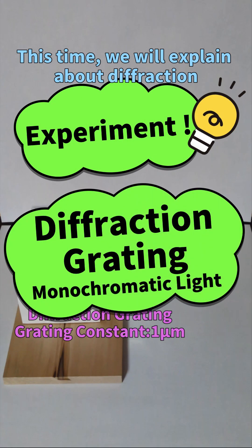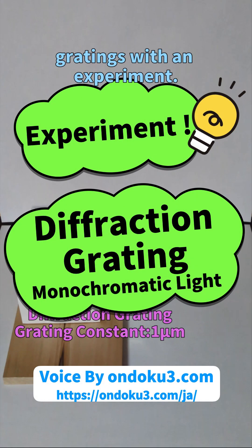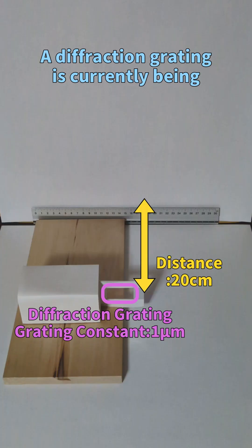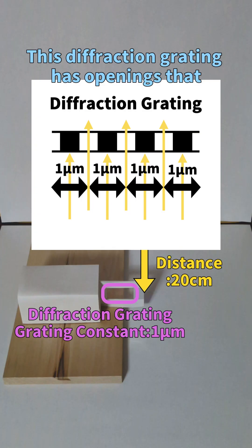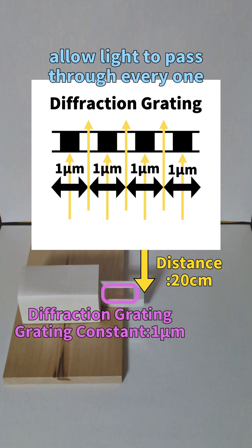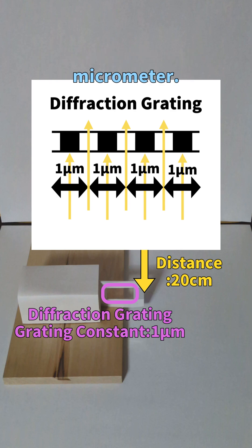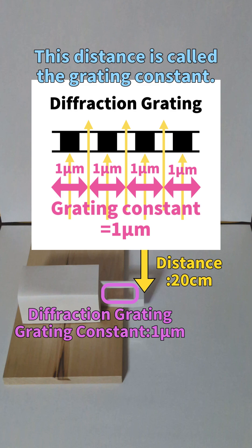This time we will explain diffraction gratings with an experiment. A diffraction grating is currently being displayed on the monitor. This diffraction grating has openings that allow light to pass through every one micrometer. This distance is called the grating constant.